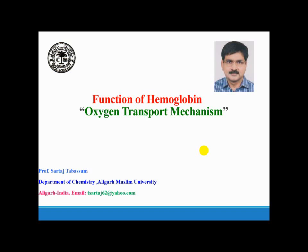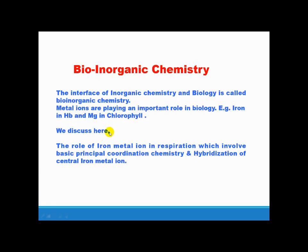Today I am going to discuss bio-inorganic chemistry as the important topic, function of hemoglobin and sub-topic for oxygen transport mechanism. Bio-inorganic chemistry can be defined as follows: all metal ions play an important role in our biological system. The interface of inorganic chemistry and biology is called bio-inorganic chemistry. We discuss here the role of iron metal ion in respiration, which involves basic principle of coordination chemistry and hybridization of central metal ion.